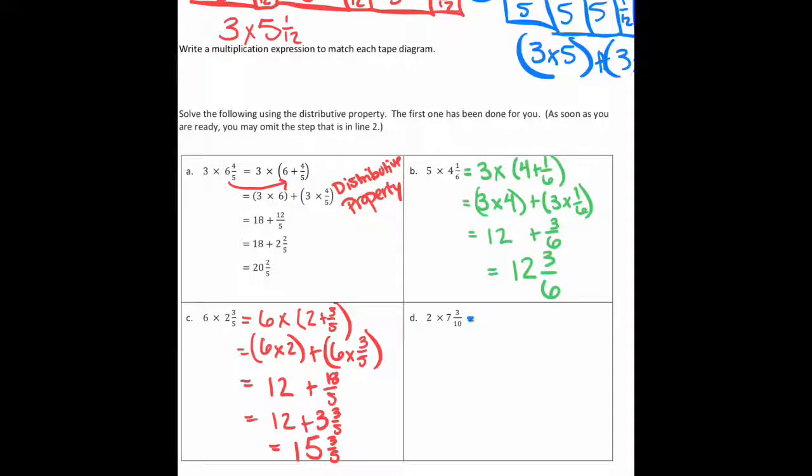And D, do the same thing. We're going to change it to 2 times 7 plus 3/10ths. And we're going to use the distributive property, and we're going to say 2 times 7 plus that 2 times 3/10ths. And that 2 times 7 is going to give you 14, and 2 times 3/10ths is going to give you 6/10ths. And when I add those together, I'm just going to get 14 and 6/10ths.